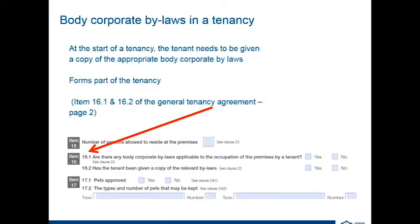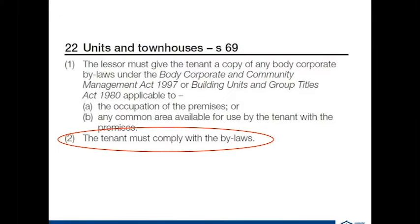The types of bylaws will mainly include things like rules on common areas, whether pets are allowed, behaviour of guests that come onto the property, and the appearance of lots on the property. As you can see in clause 22 of your general tenancy agreement, the tenant must comply with the bylaws, and this is where it also states that the tenant is given a copy of any body corporate bylaws.